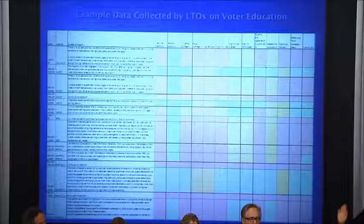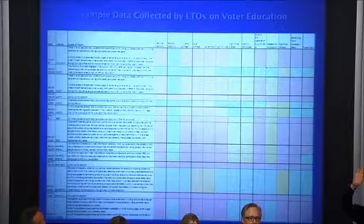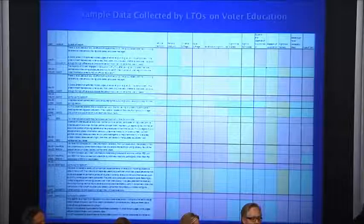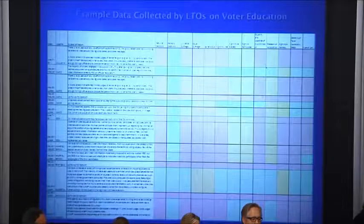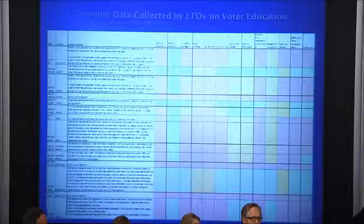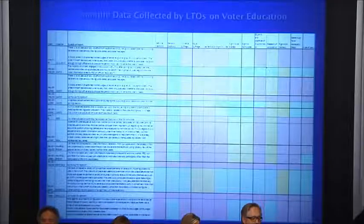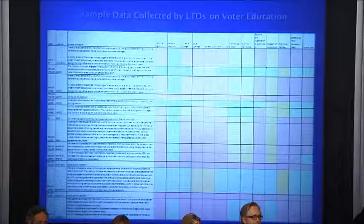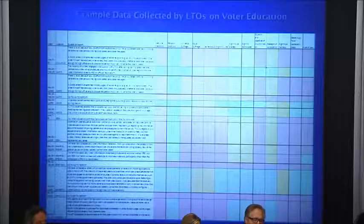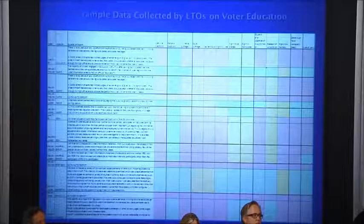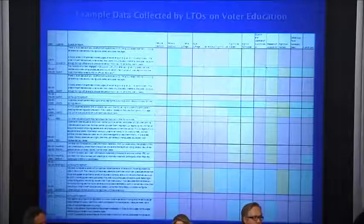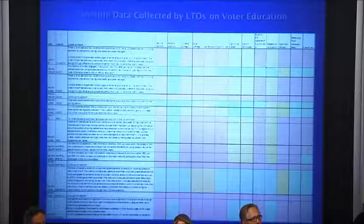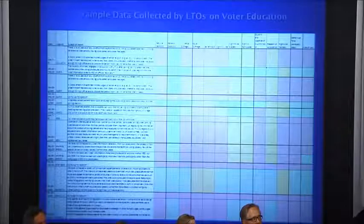This example — apologies for the tiny font — shows how we compile long-term observation reports. Using voter education in Egypt as the example, we've taken excerpts of reports from all our teams across all the weeks between the first and second rounds of the presidential elections, and we've started trying to understand how they meet the indicators we laid out earlier. We've done it on a red-amber-green scale, and you can see a lot of red — generally, we weren't very happy with voter education in Egypt.